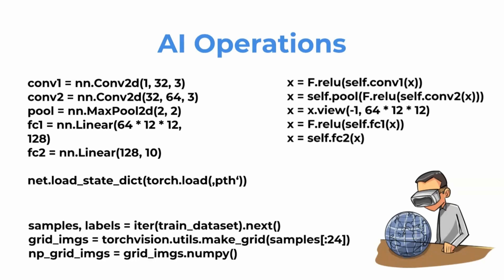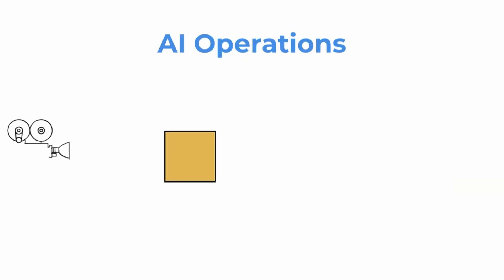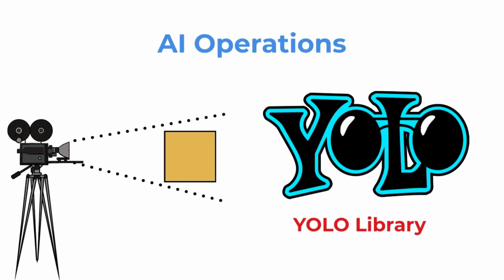In basic form, deep learning only identifies if an object exists and what its classification is. To make localization and identify positions, we use tools like the YOLO library, which divides images into small parts and identifies in which part of the image it's possible to detect an object.